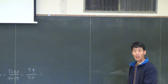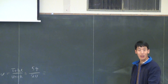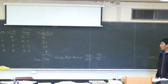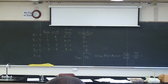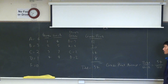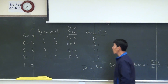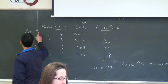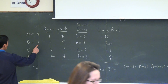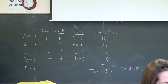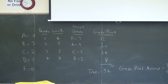This is an explanation of how your grade was calculated. An A is worth 4 points, B is 3, C is 2, D is 1, and F is 0.